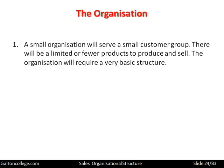A small organization will serve a small customer group. There will be limited products to produce and sell, and the organization will require a very basic structure. A small company producing one product does not require a large sales team by and large. Although in an age of globalization it may have a single sales representative in the country in which it's based but also agents in other countries to try to gain sales in those markets. Generally speaking, small organizations have a very basic sales structure.